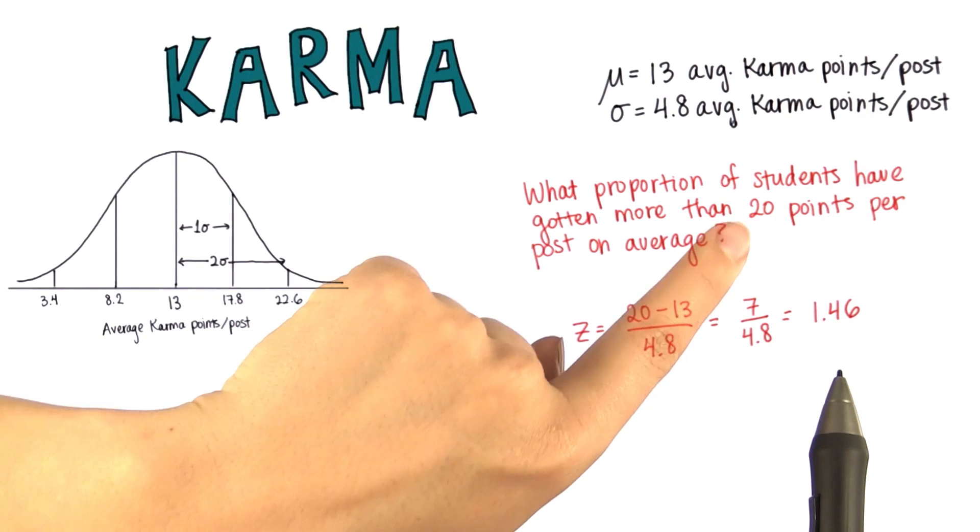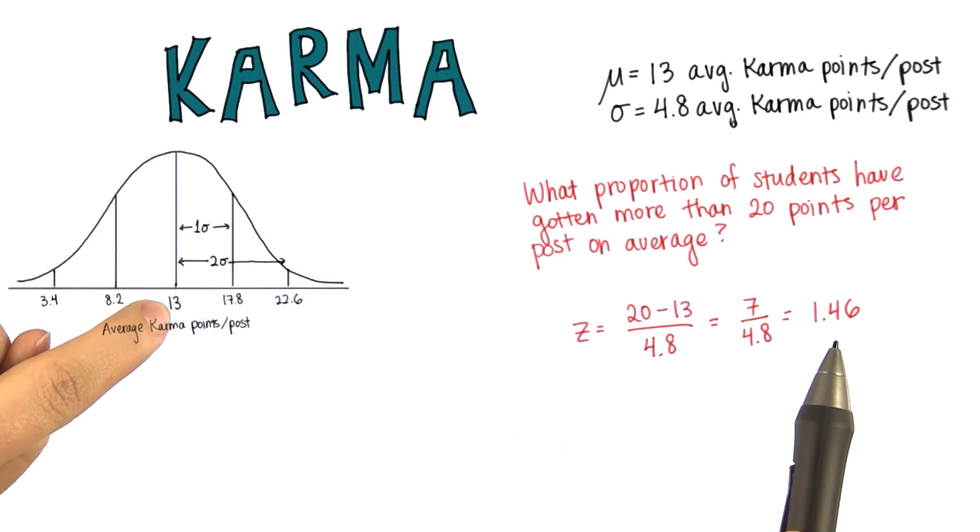So we find the distance from the mean, which is now going to be positive, and divide by the standard deviation. We get that 20 is 1.46 standard deviations away from the mean.